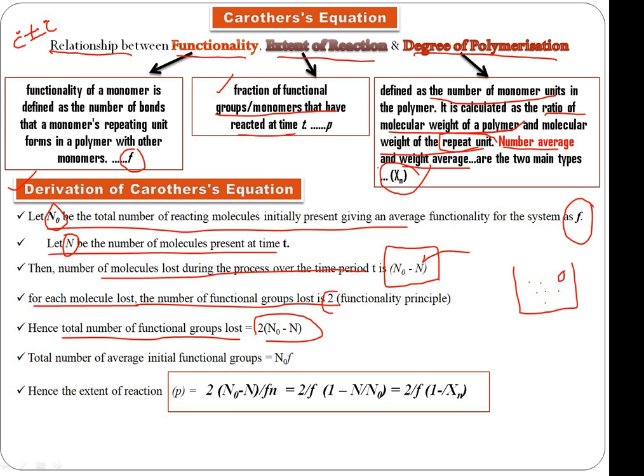The total number of initial functional groups - if average functionality is f and total molecules are N₀, then total average functional groups are N₀f. Now we can write the extent of reaction p as the fraction of functional groups that have reacted: p = 2(N₀ - N)/(N₀f) = (2/f)(1 - N/N₀).